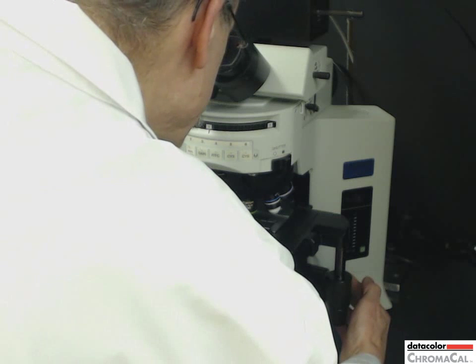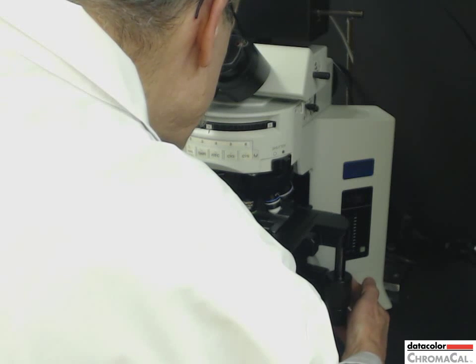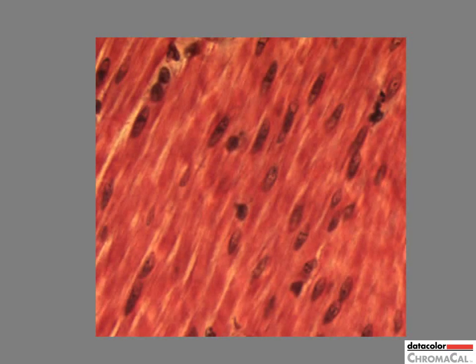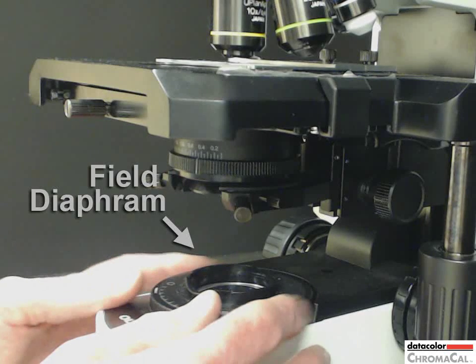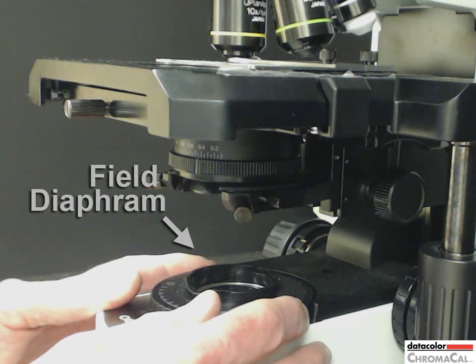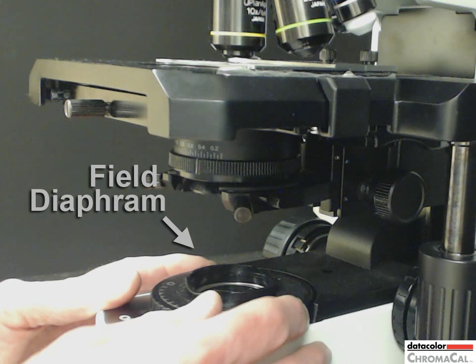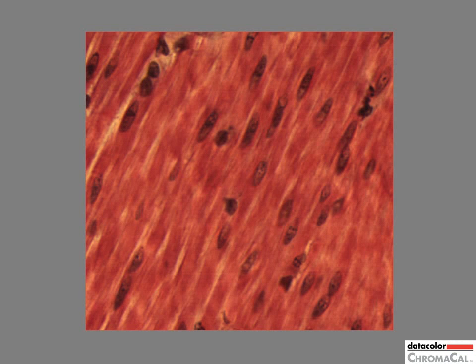Find your desired area of the sample and focus. Once focused, turn the dial for what is called the field diaphragm located under the condenser on this microscope. Here's what you'll see on the microscope.